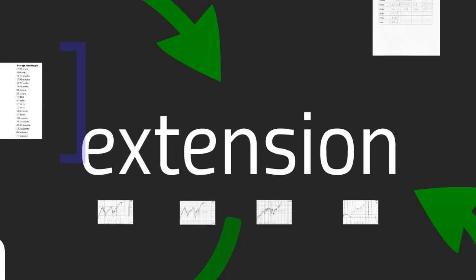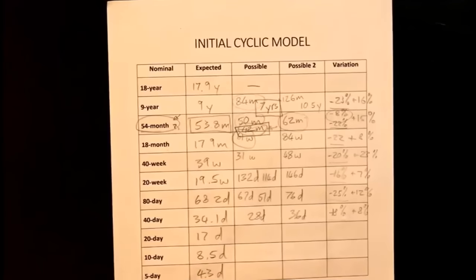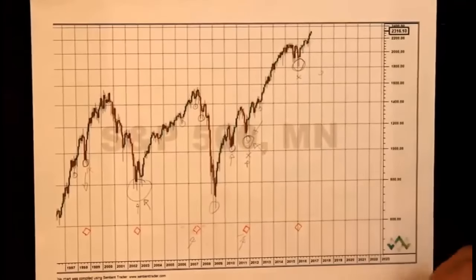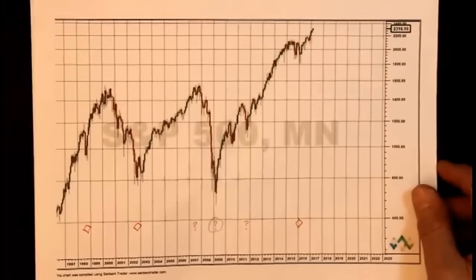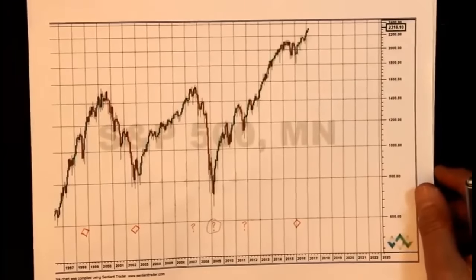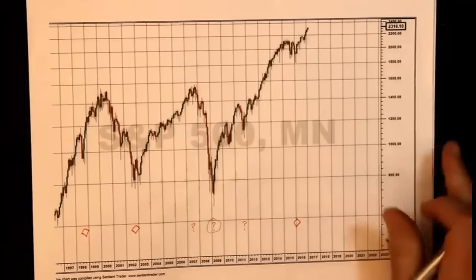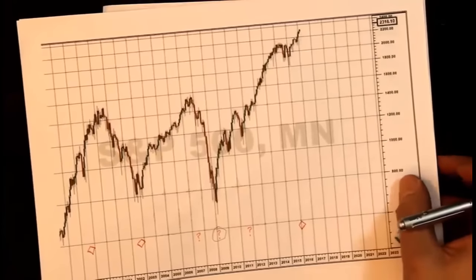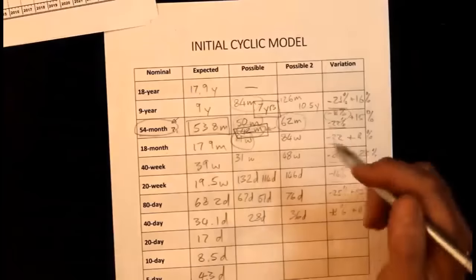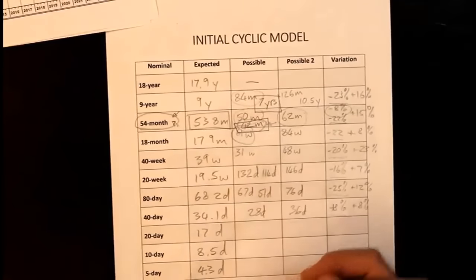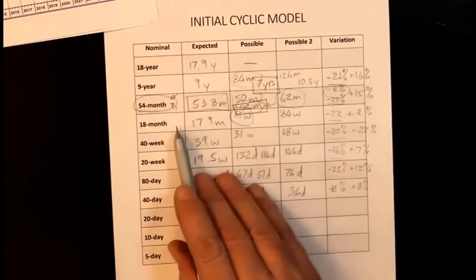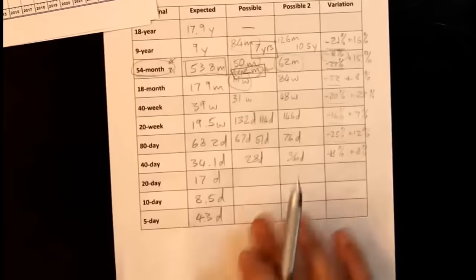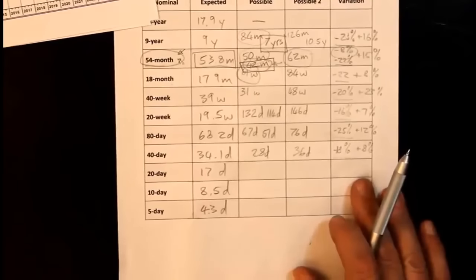The phasing analysis extension process extends our analysis from our longest cycle — the 54-month cycle dealt with in the entry stage. We haven't necessarily identified every single trough of the longest cycle, and we have two alternate analyses we're working with. The process steps down one cycle at a time through the nominal model — from the 54-month cycle to the 18-month, all the way down to the 5-day cycle, which is the shortest cycle we'll deal with using end-of-day data.